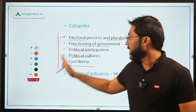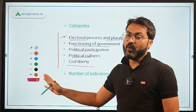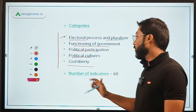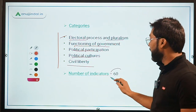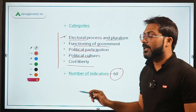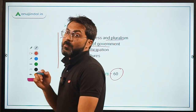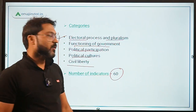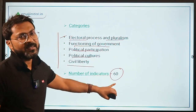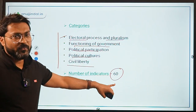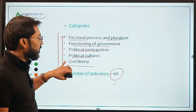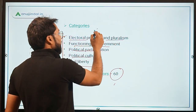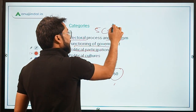You should remember the five categories but not all 60 indicators. There are five categories and 60 indicators. According to this index, there are five types of democracy: full democracy, flawed democracy, hybrid regime, and authoritarian regime.